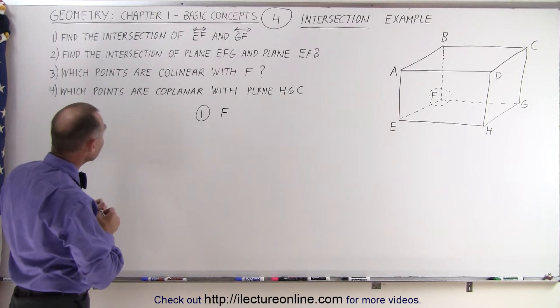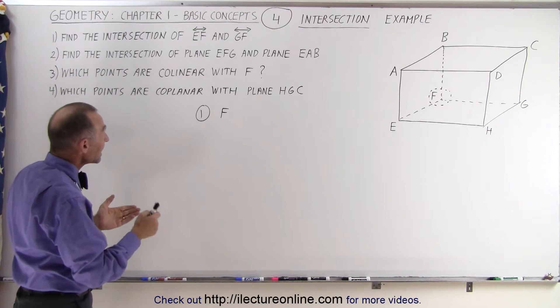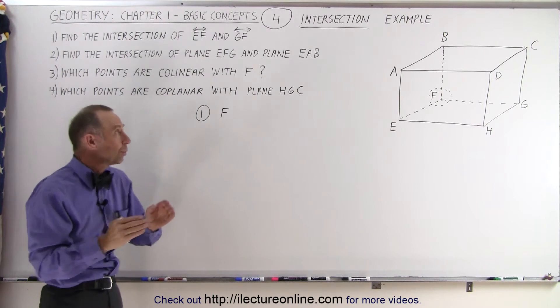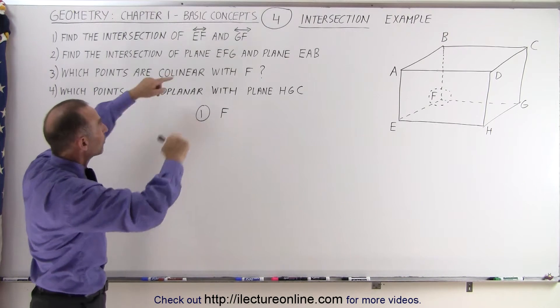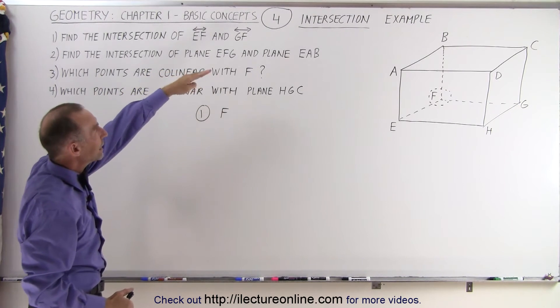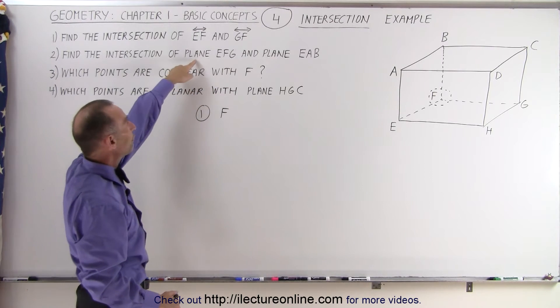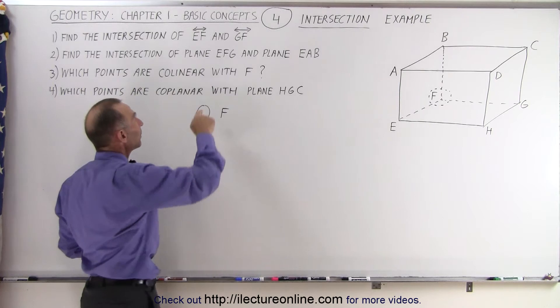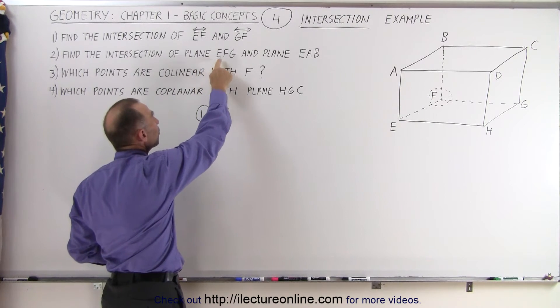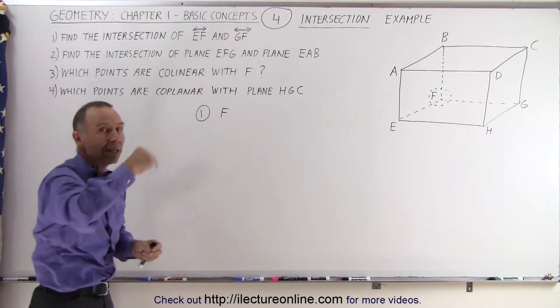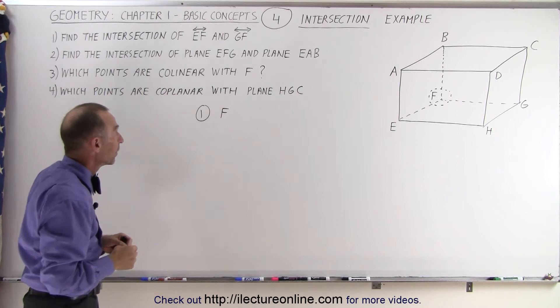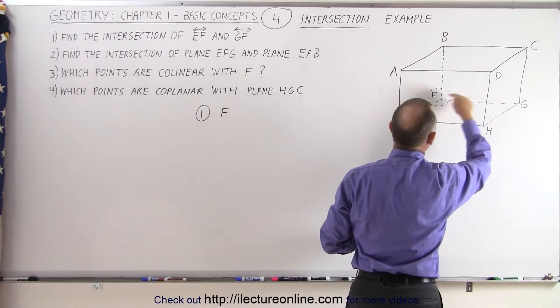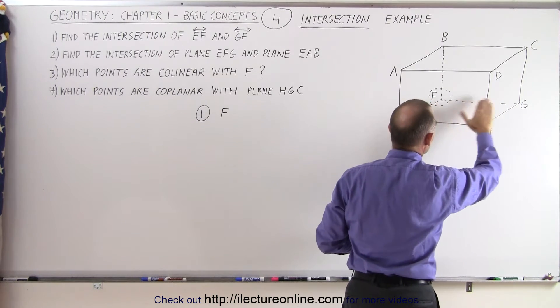The second question: find the intersection of the plane EFG and the plane EAB. Notice we do not have any markings on top of the three letters EFG and EAB. But we do have the word plane in front of it, which means that we're dealing with a plane. Any plane is always defined by three points that are not collinear, that are not on the same line. So when we look at EFG, they're not on the same line, and they define a plane.